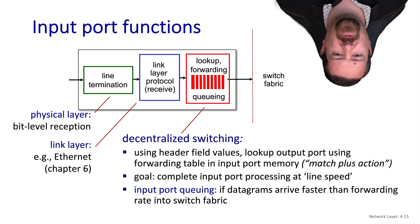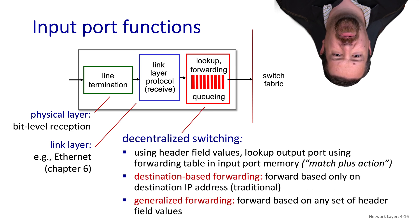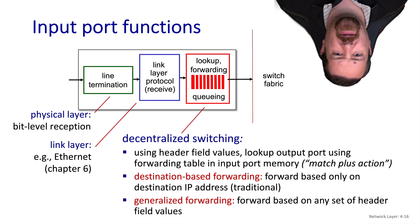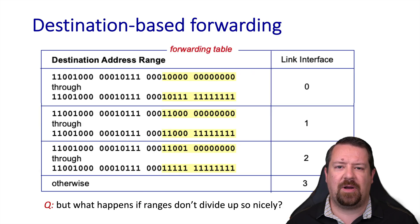So in a high-end router, the switching fabric will be able to keep up with all of the input ports running at full speed all the time. Traditional IP forwarding is based on looking at the destination IP address only, and traditional routing hardware is optimized around this destination-based forwarding. It is also possible to perform generalized forwarding based on any of the header fields, and when we discuss software-defined networking, we'll see more examples of this behavior. For now, we'll focus on destination-based forwarding because that is the traditional IP behavior.